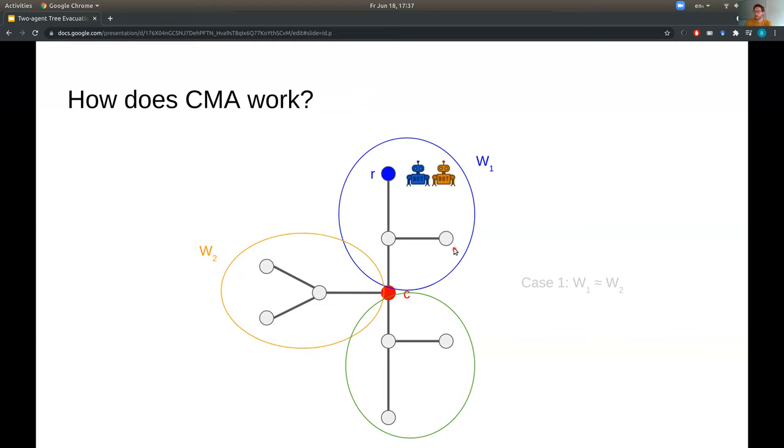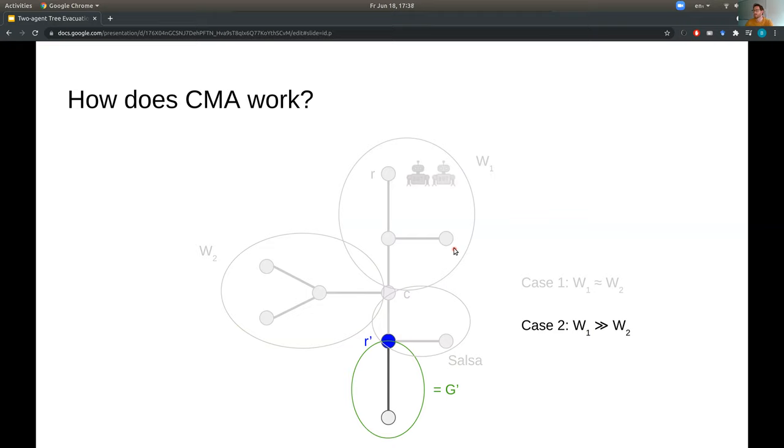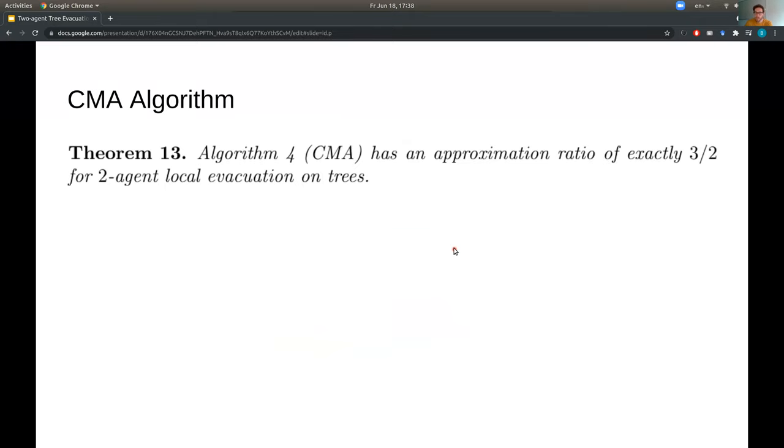But now if we go back to the second case, so the second case is when w1 is much greater than w2, then the orange robot has still quite a lot of spare time. And it can use this spare budget to explore some of the remaining green part with a subroutine which we call SALSA. And then there's still going to be some green part left over, and the root of this green part we label as a new R prime, and the green part is G prime. And we again show that the exploration so far was efficient enough, and we can recursively apply our algorithm to G prime and R prime. So that's basically our local communication algorithm in a nutshell, and we have a theorem to go along with it, which shows that it gives a 3 over 2 approximation ratio. And now for the proof, we leave this for the paper.